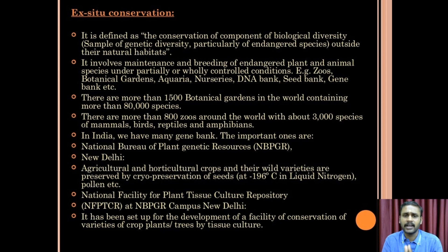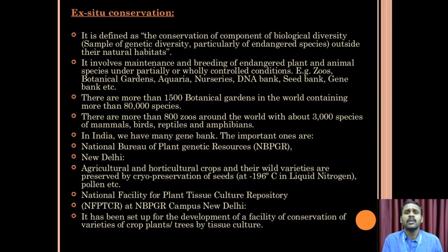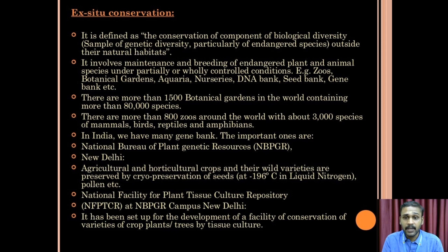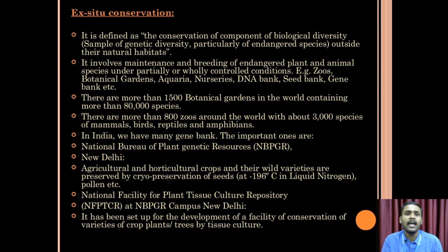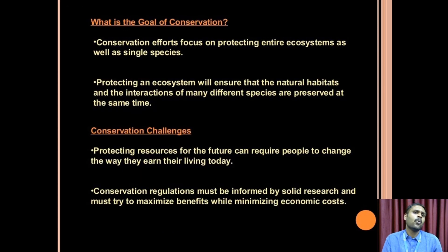There are more than 1,500 botanical gardens in the world containing more than 800 species. Even in our college, we have a botanical garden and we are keeping species also. There are more than 800 zoos around the world with about 3,000 species of mammals, birds, reptiles, and amphibians. We are protecting animals in zoos as well. In India, we have many genetic banks. Importantly, the National Bureau of Plant Genetic Resources, NBPGR, in New Delhi preserves agricultural and horticultural crops and wild varieties in cryopreservation at minus 196 degrees in liquid nitrogen. There is also a National Facility for Plant Tissue Culture.